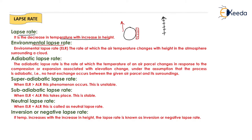The definition of environmental lapse rate, or ELR, is: the rate at which the air temperature changes with height in the atmosphere surrounding a parcel — that is known as environmental lapse rate.